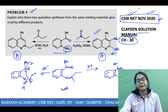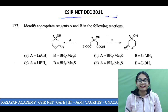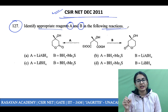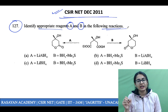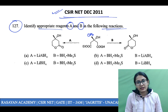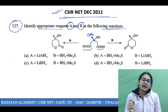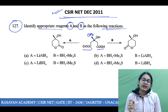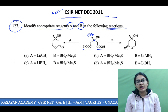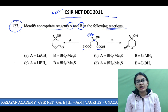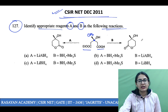Moving onwards — it is a very old question we have done many times, but let's remind ourselves — it is a question from CSIR NET December 2011. Identify appropriate reagents A and B in the following reaction. This is a question on chemoselectivity and protecting groups. You have one carboxylic acid and the other group is an ester — you have to figure out which group is reducing the ester and the carboxylic acid separately to give you the cyclic esters shown. This is a direct question from chemoselectivity and protecting groups in the Clayden book.